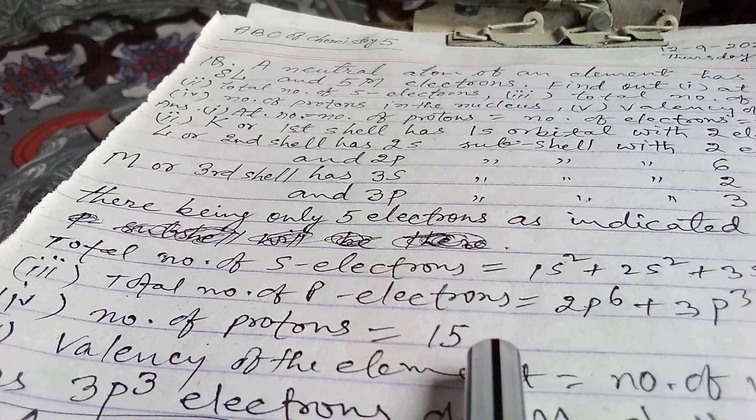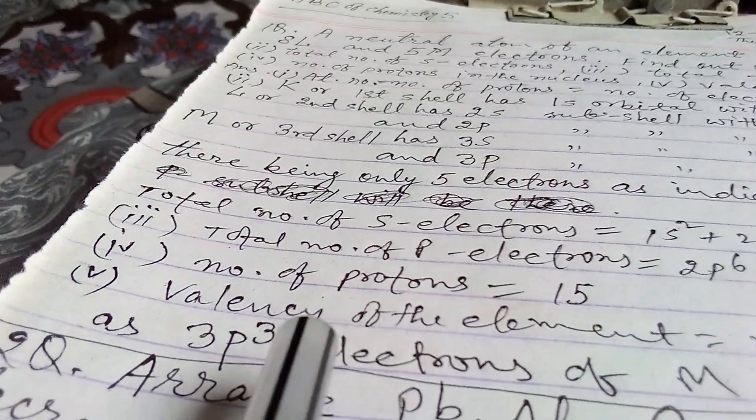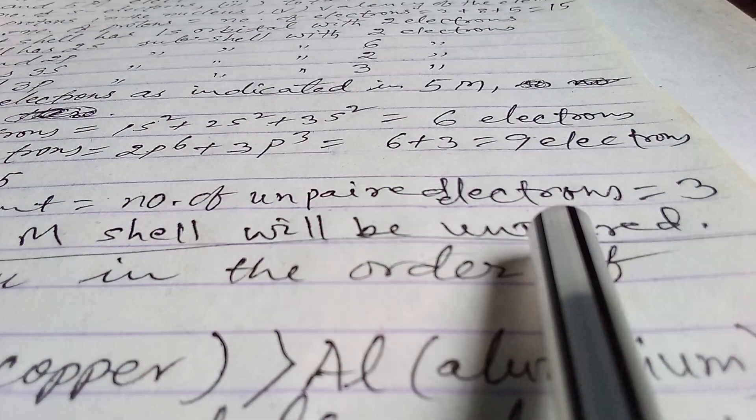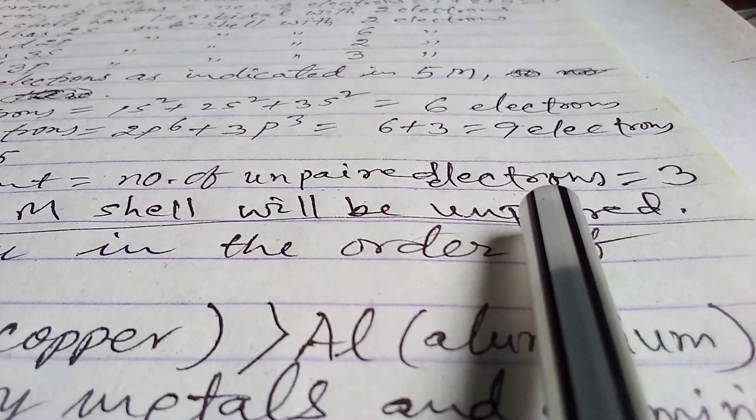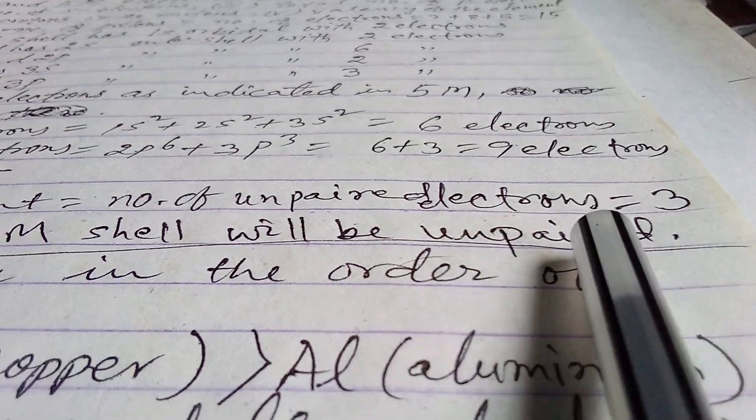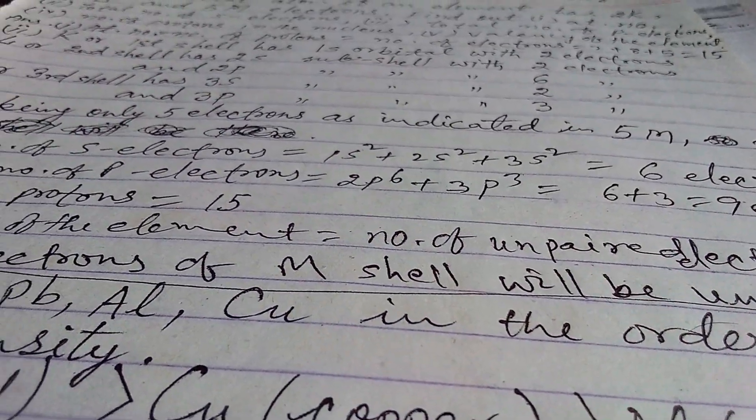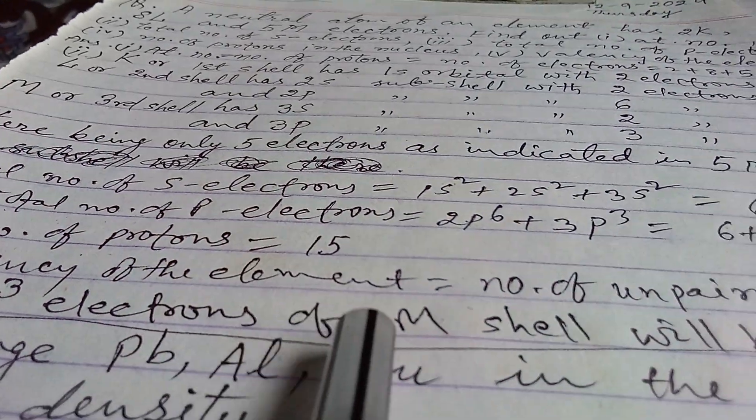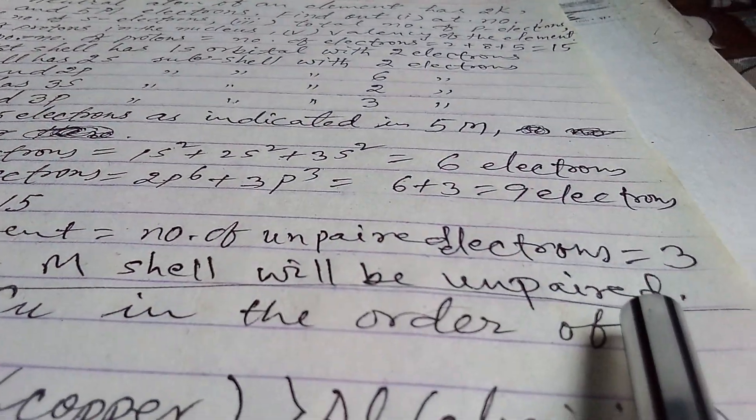Fourth is number of protons, and that is 15. And fifth is the valency of the element, which is equal to number of unpaired electrons in the last shell, and that is 3, as 3p3 electrons of M-shell will be unpaired.